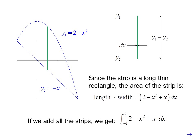If we add all the strips, we get the integral from negative 1 to 2 of 2 minus x squared plus x dx.